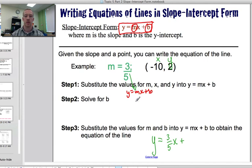So I plug in the 3 fifths, I plug in the y, and I substitute in the negative 10 for x. All right, and I still have that plus b. So I've substituted in the x, the y, and the m. So I multiply those, I get 2 equals negative 30 over 5 plus b.